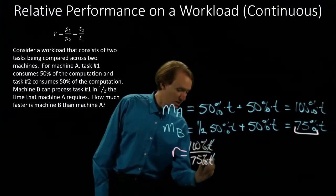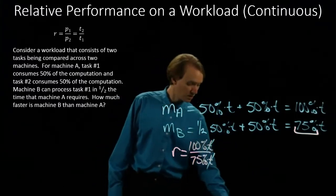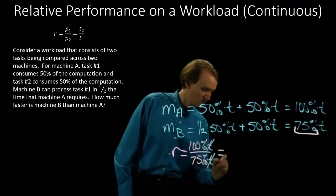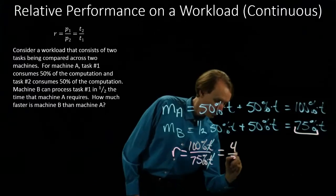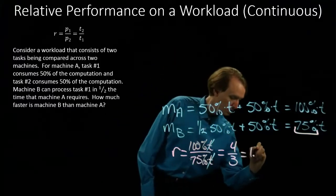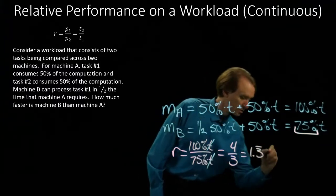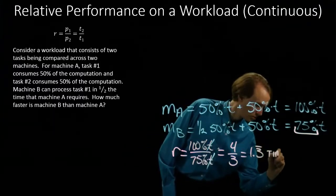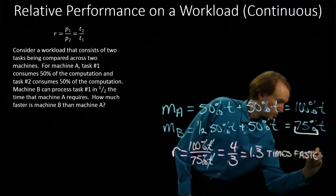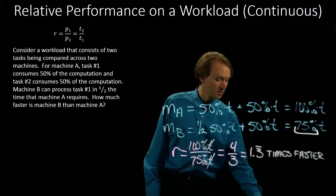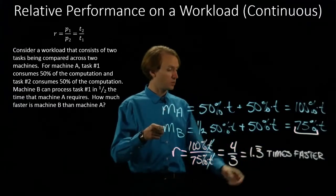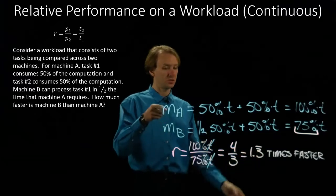The T's will obviously cancel. So, this leaves me with 100% divided by 75%, which would be four-thirds. So, now I can say that machine B is 1.3 times faster than machine A.